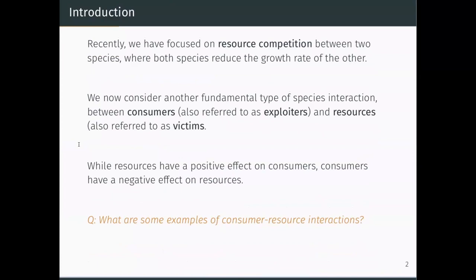So recently we've been focused on resource competition between two species, where we have two species competing for a shared resource, say food, and interactions between these species are negative, so they each reduce the growth rate of the other. We've also considered, for example, mutualism, where interactions are both positive.